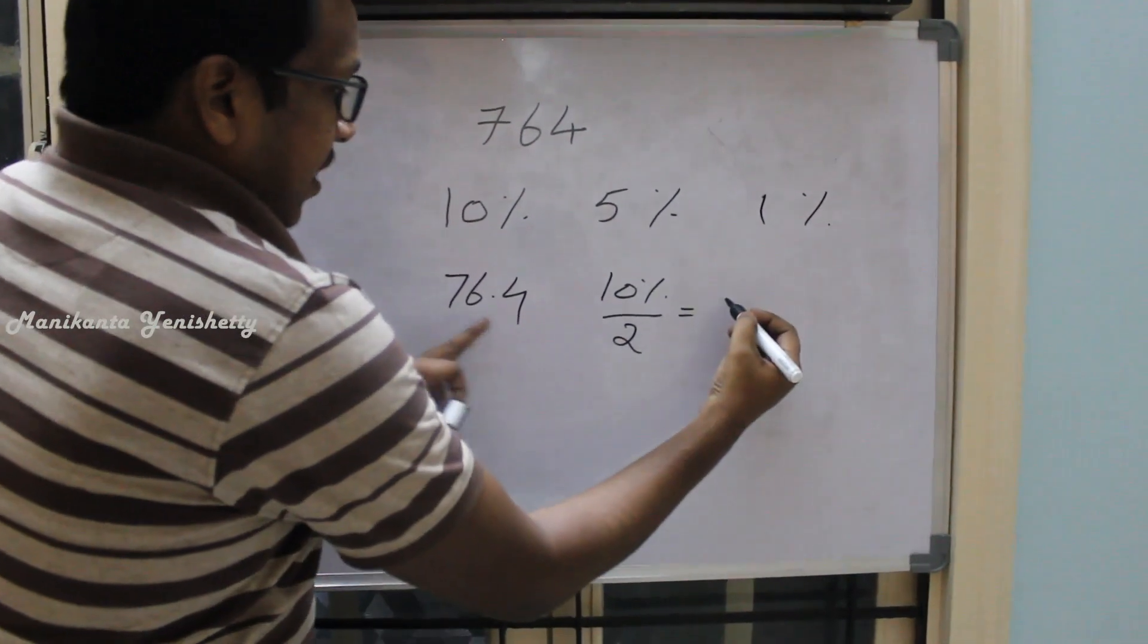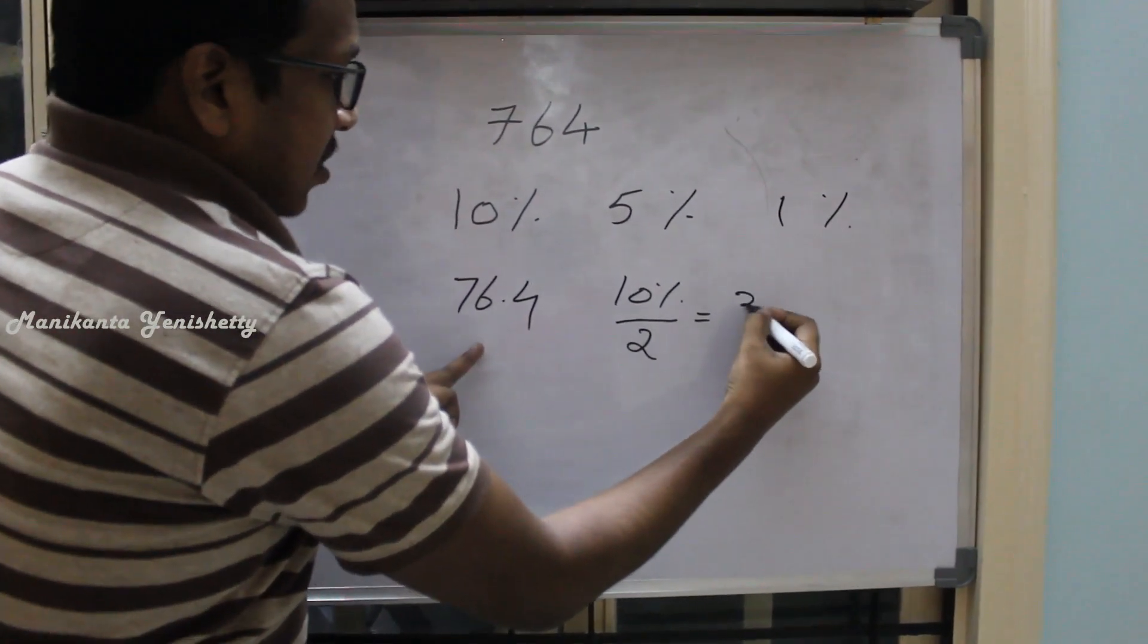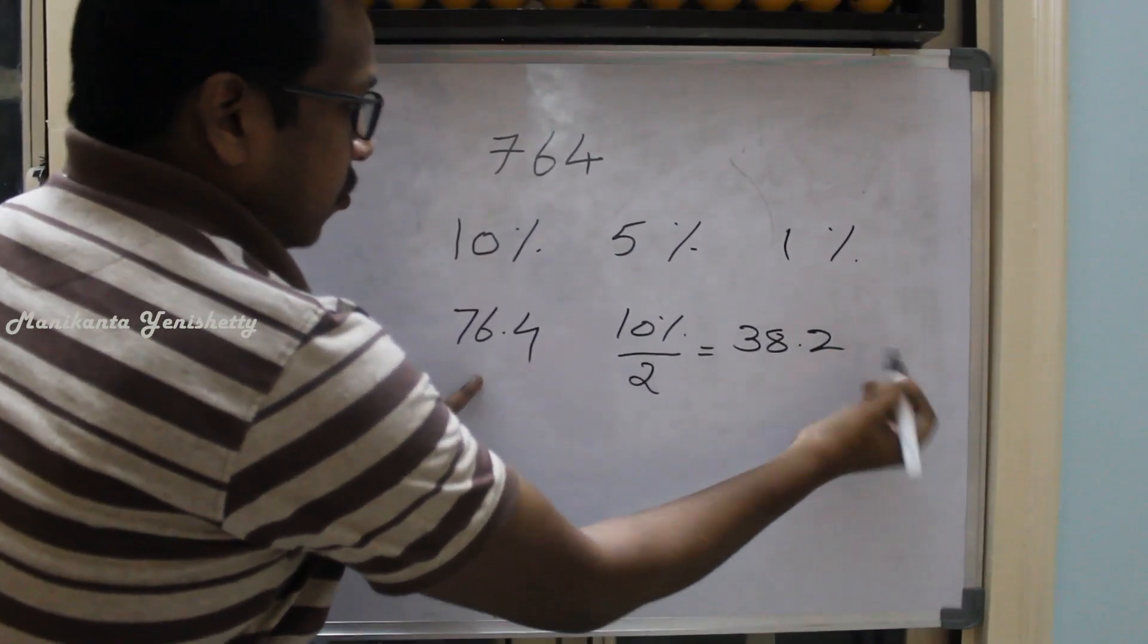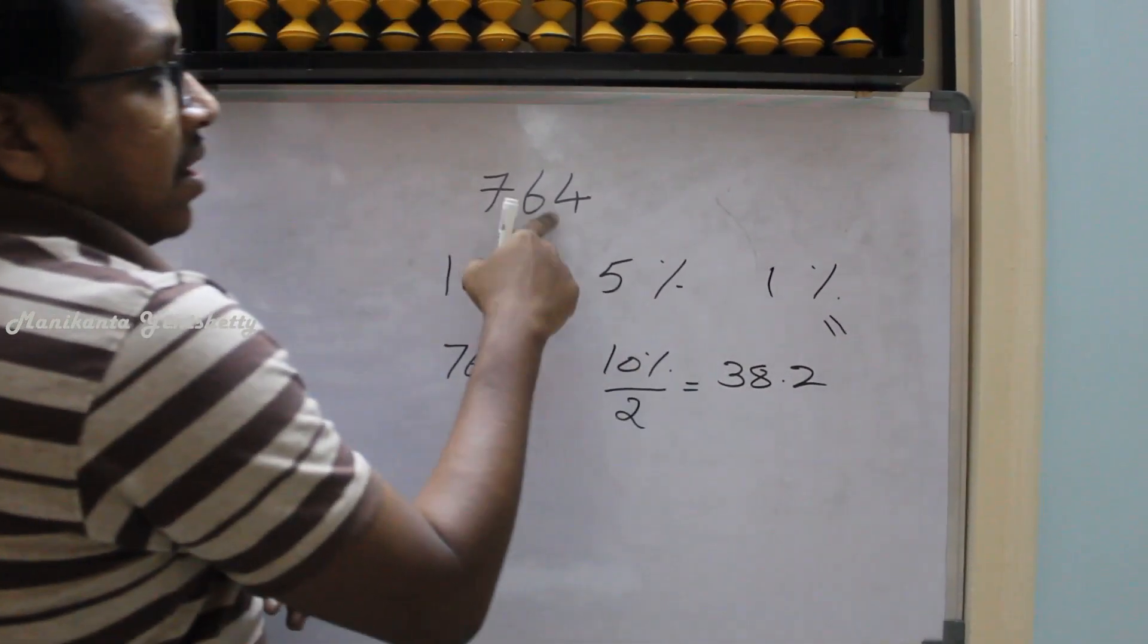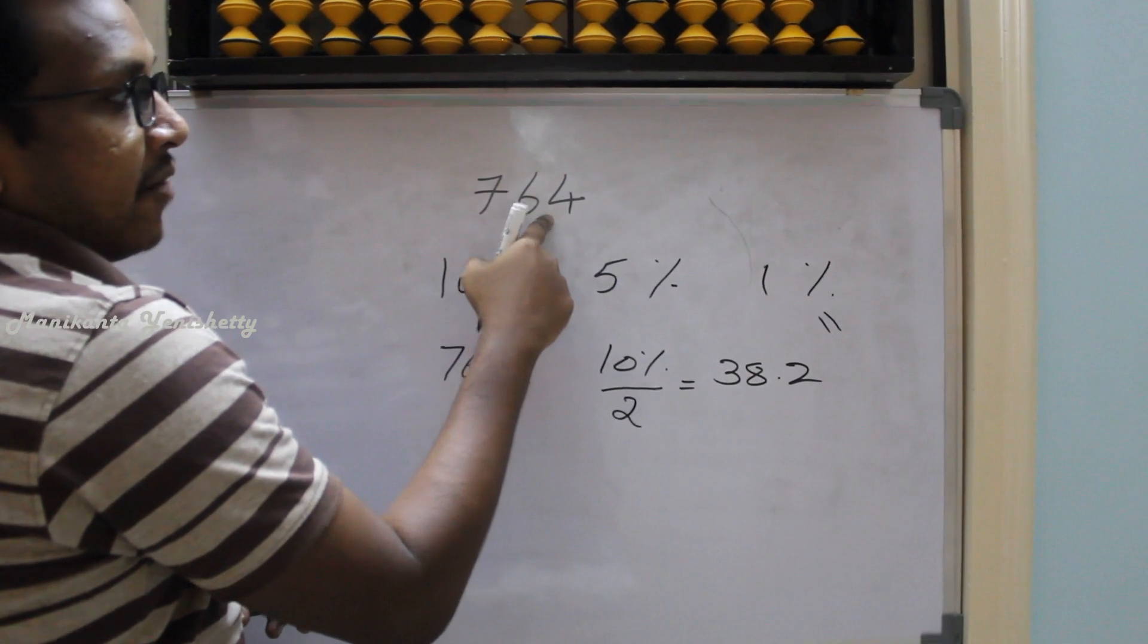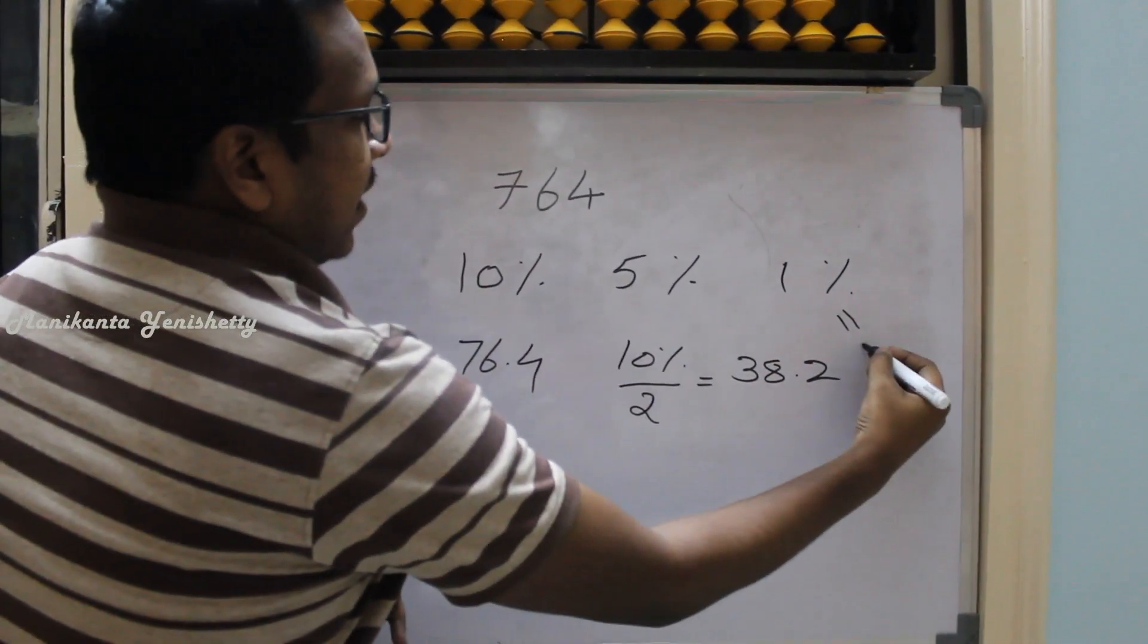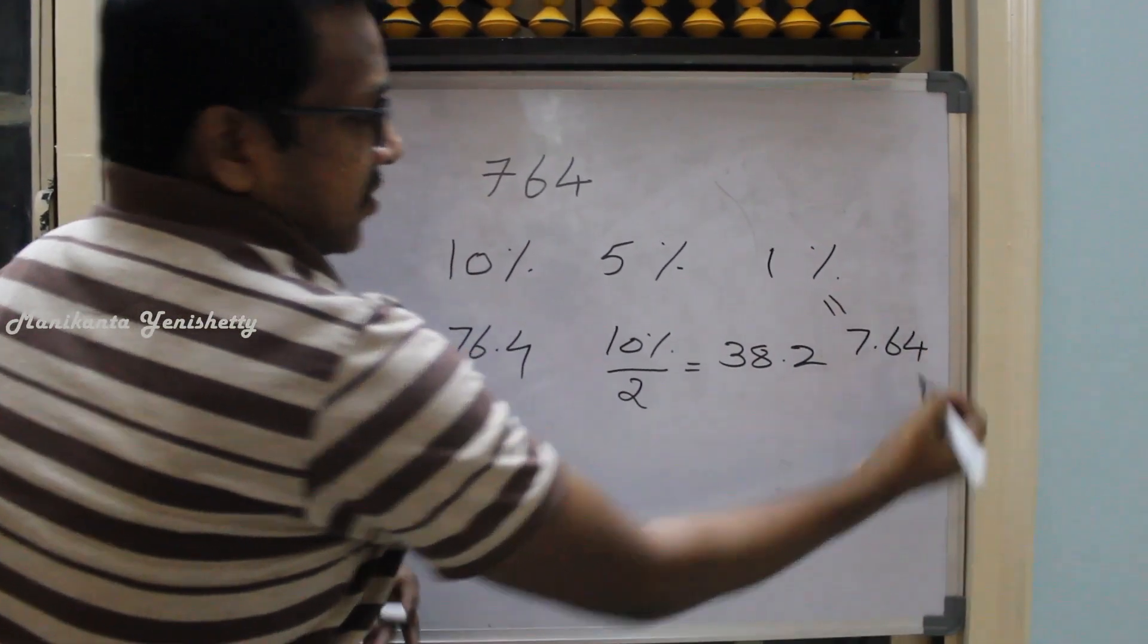So it is nothing but 76.4 divided by 2 is nothing but 38.2. And 1% is nothing but keeping the decimal point after two digits from the right hand side. So, 7.64.